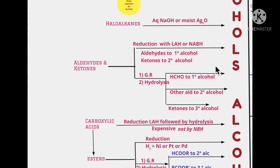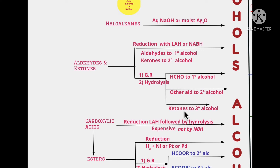Aldehydes and ketones can be converted to alcohols by different methods. The first one is reduction. Aldehydes get converted into primary alcohols, whereas ketones get converted into secondary alcohols, using lithium aluminium hydride (LAH) or sodium borohydride (NaBH4). Aldehydes and ketones also react with Grignard's reagent, where an addition reaction takes place followed by hydrolysis. Methanal gives us primary alcohol, any other aldehyde gives us a secondary alcohol, whereas ketones on reacting with Grignard's reagent followed by hydrolysis give us tertiary alcohols.